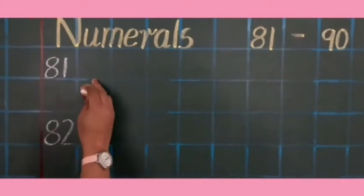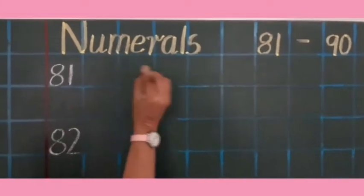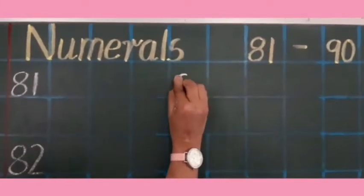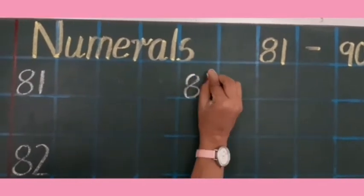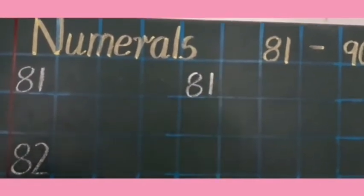And children, after that here leave three boxes. 1, 2, 3 and write it again. 81. And complete the whole line.